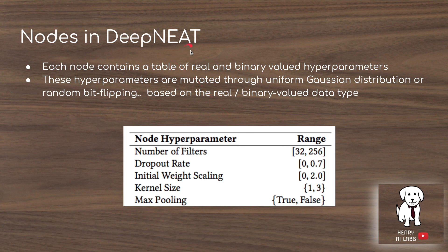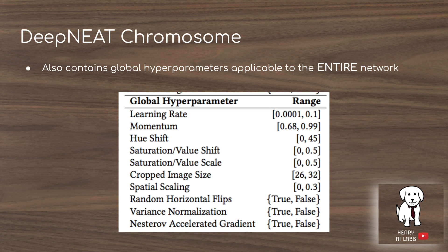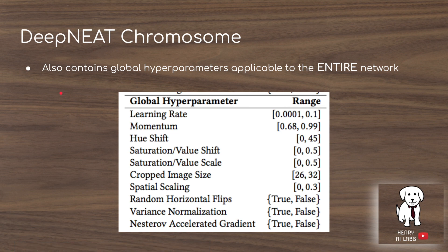The nodes in DeepNEAT each contain a table of real and binary value hyperparameters. Things like the number of filters in the node, the dropout rate, the initial weight scaling, kernel size, and whether it's a max pooling layer or a convolutional layer. In addition to these per-node hyperparameters in the DeepNEAT chromosome, the genotype also encodes global hyperparameters applicable to the entire network — things like learning rate, momentum, and data augmentation parameters — encoded in the same genotype used for fitness evaluation, mutation, and crossover.